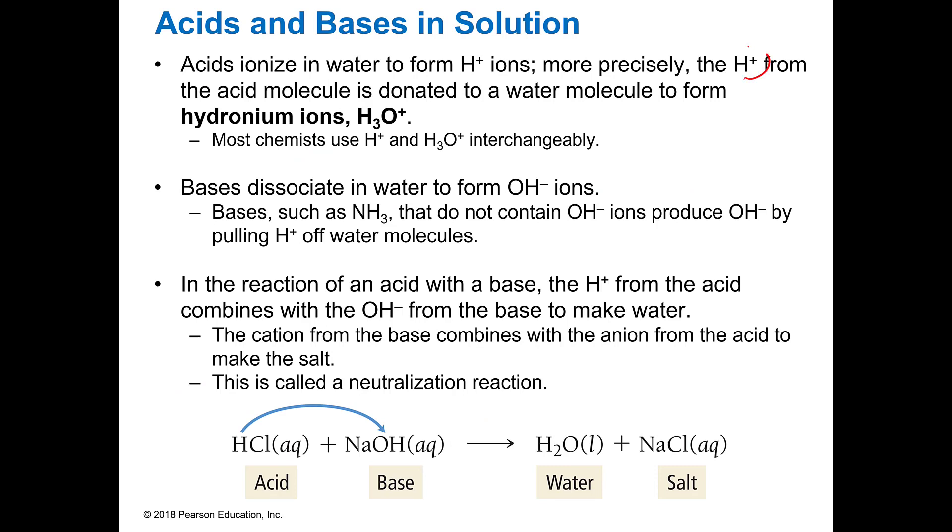So we use these two things interchangeably a lot of times, H+ from the acid and then this thing called the hydronium ion. Most people just use those interchangeably and honestly you use whichever one is helpful in balancing the equation. The reason that you can use hydronium is because like if I'm saying H2O turns into H+ and OH-.